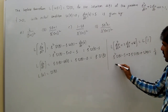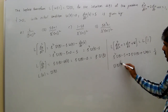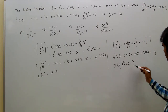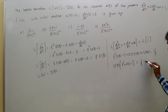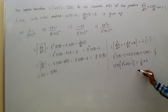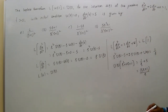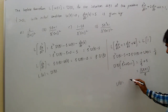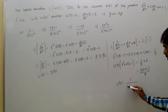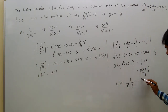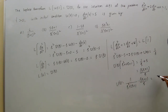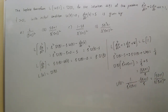Now taking U(s) common: U(s) times (s squared plus 2s plus 1) equals 1 by s, and the minus 5 comes to this side as plus 5, giving (5s plus 1) by s. So U(s) equals (5s plus 1) divided by s times (s squared plus 2s plus 1), which equals (5s plus 1) divided by s times (s+1) whole squared.